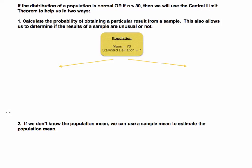I want to provide a quick overview of what we're going to do. Suppose we have a population with a mean of 78 and standard deviation of 7 — these might be test scores, where the statistics exam mean is 78 and the standard deviation is 7. What if I decided to take two samples: one with a sample size of 20 and the other with a sample size of 100? We can suppose the population is normally distributed.